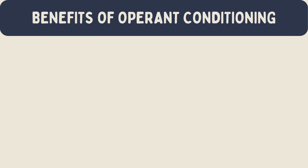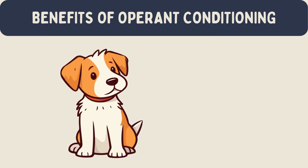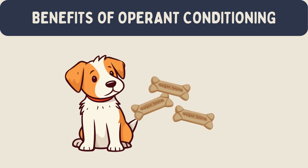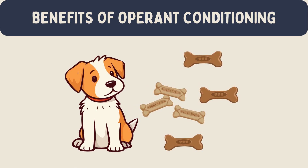Operant conditioning is useful because it helps people learn new behaviors and can also help stop unwanted behaviors. For example, if a dog is rewarded with treats for sitting on command, it will sit more often. If a child is praised for sharing toys, they will share more often.